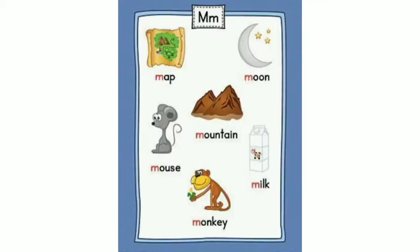First, see this picture. M for map, M for moon, M for mountain, M for mouse, M for milk and M for monkey.